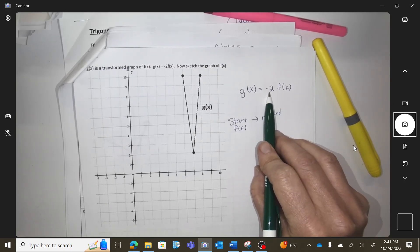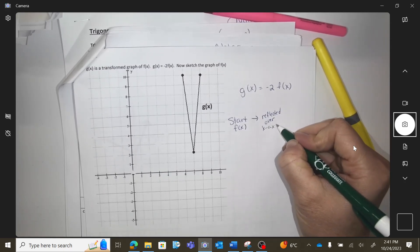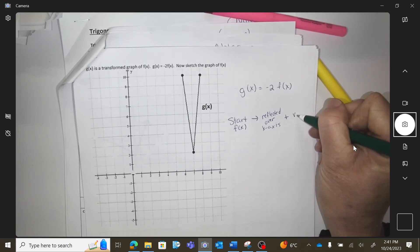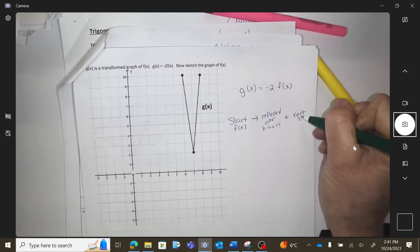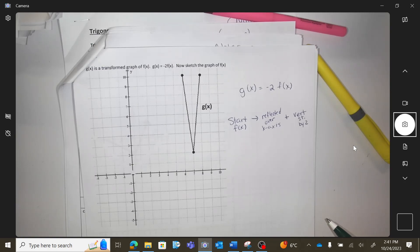Over the x-axis. And what else did you do? You did a vertical stretch by two. And then you got to the g. How do we go backwards and undo that?